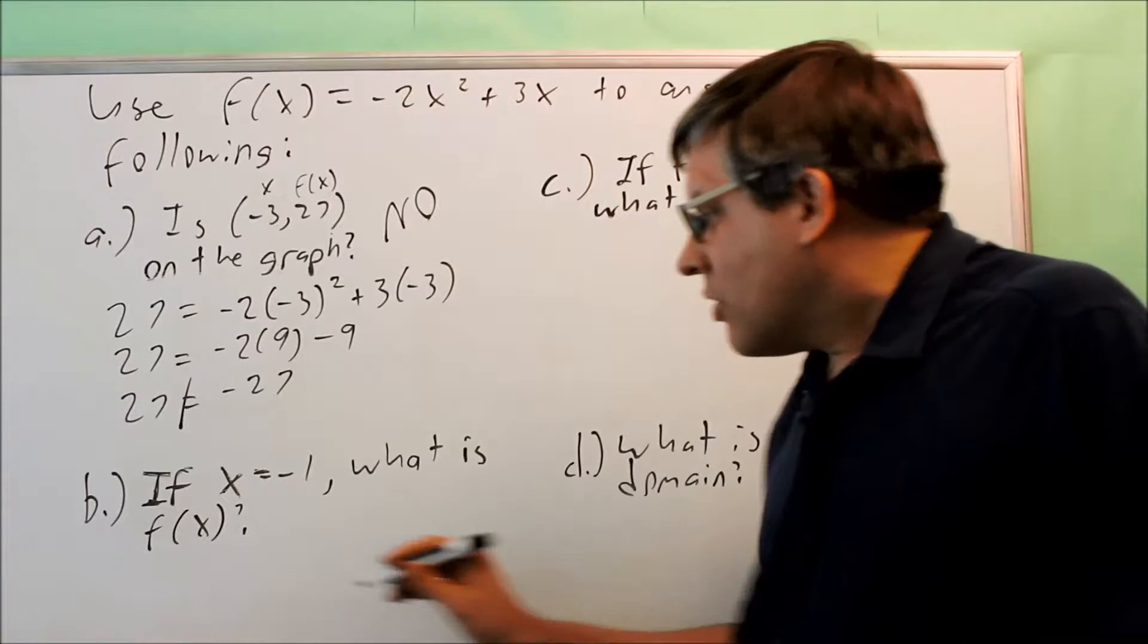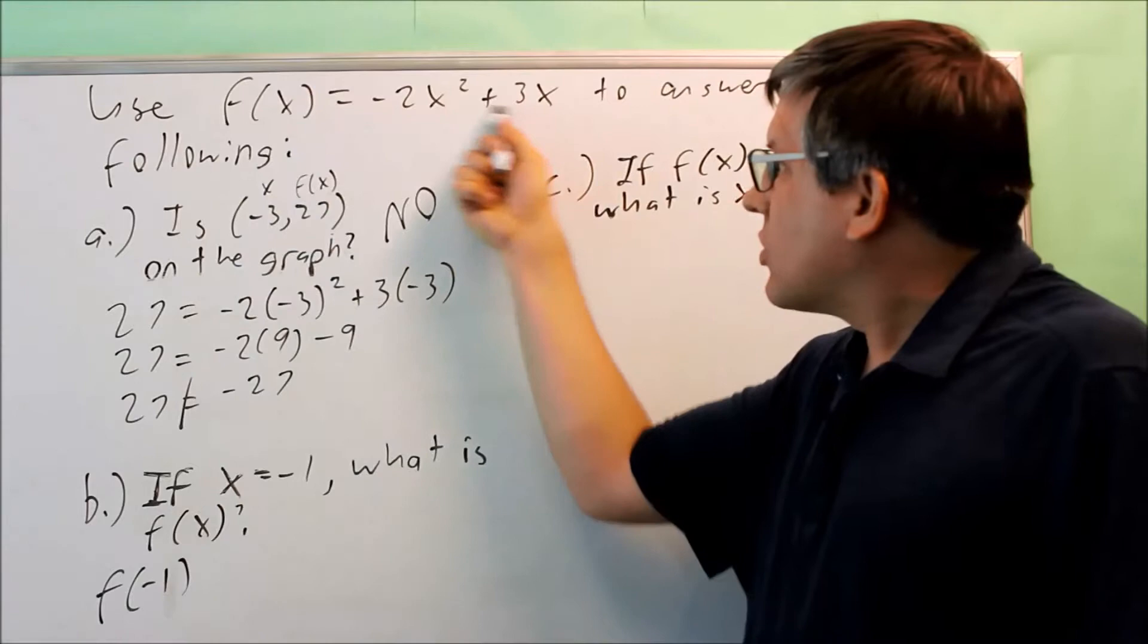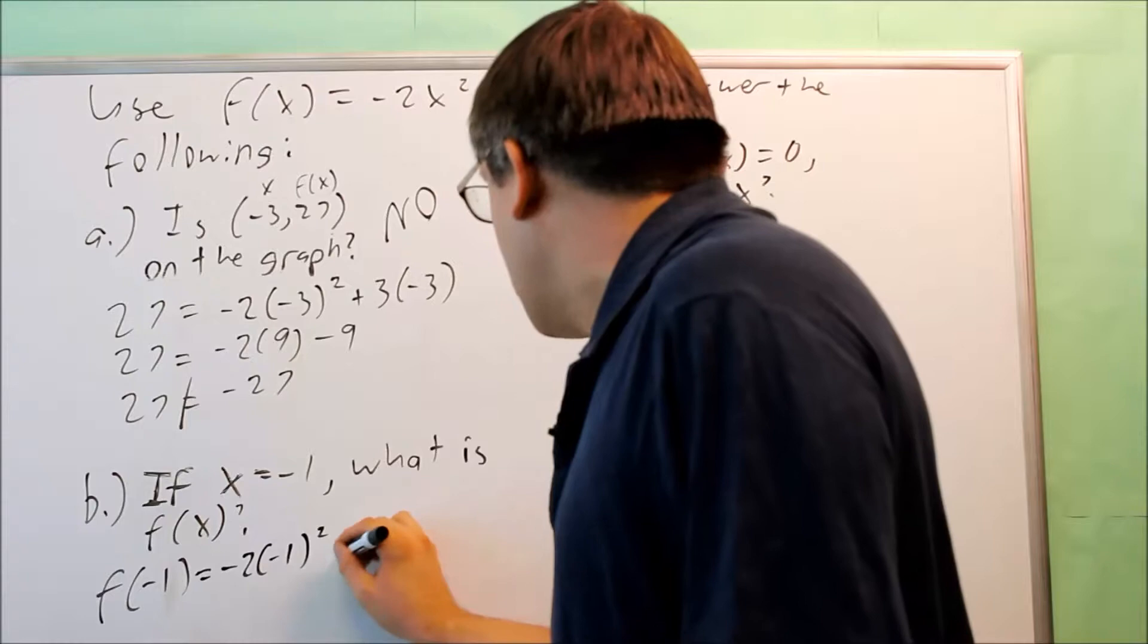Next question, if x equals -1, what is f(x)? That question's asking us to find f(-1). So I put -1 in there in place of x, which means that I have to do the same thing in my equation. So that's -2(-1)² + 3(-1).